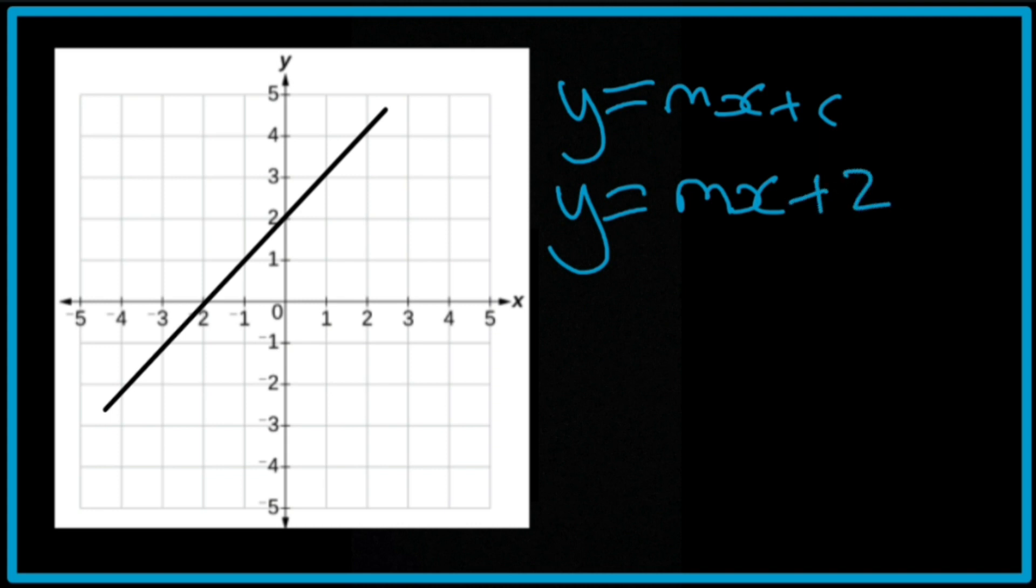Now, all we need to do is find the gradient itself, and I'm going to use the rise-run method like I did before in a previous video. So I'm going to start here. It goes along by 2, and it goes up by 2 to make a triangle. So that's 2 over 2, which gives me an answer of 1.